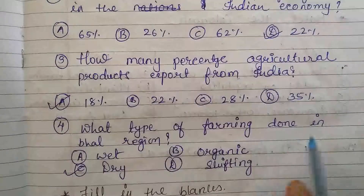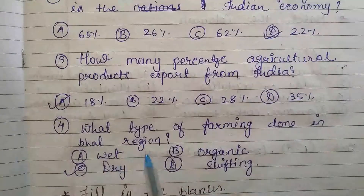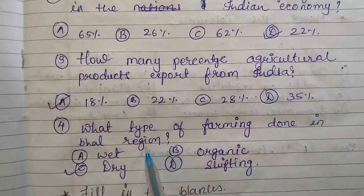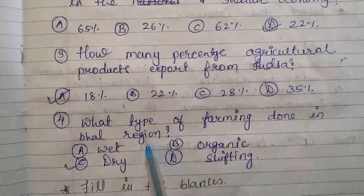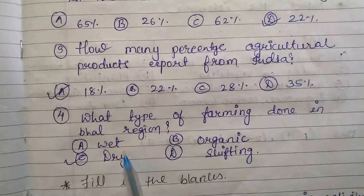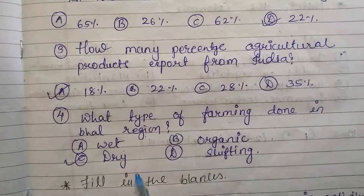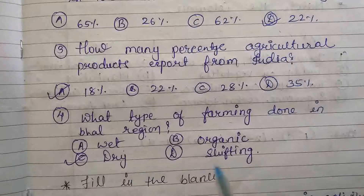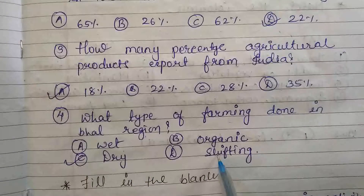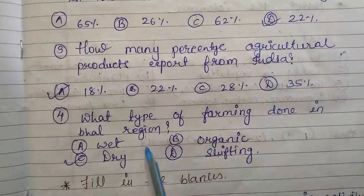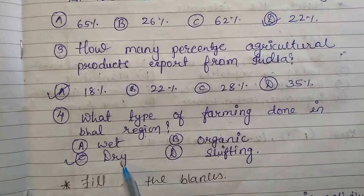The next question: what type of farming is done in the Bhar region? Bhar region mein kis tarah ki farming hoti hai — options are wet farming, organic farming, dry farming, and shifting farming. Bhar region ke andar that is dry farming.